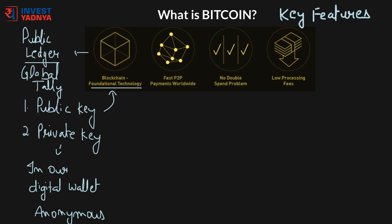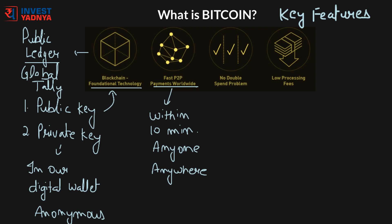The second key feature is a fast peer-to-peer network. Bitcoin transactions are typically verified and completed within 10 minutes, so you can send money to anyone in the world without access to a banking system — with just internet access — within 10 minutes.